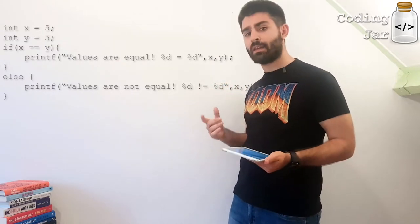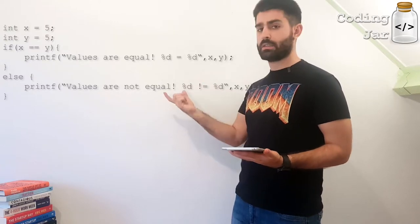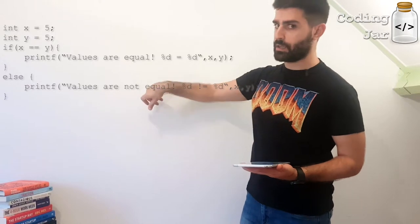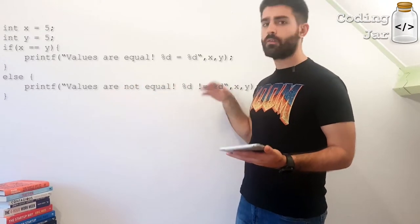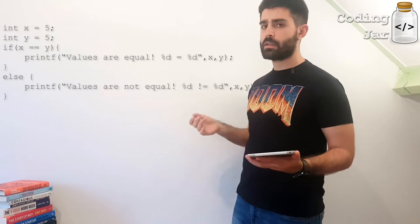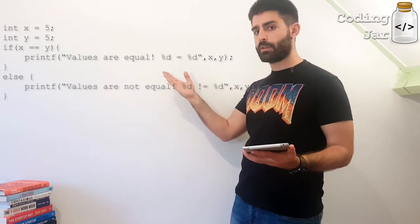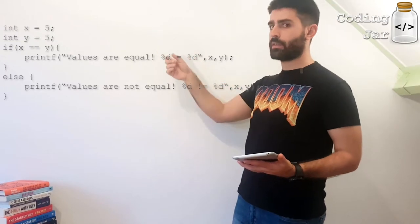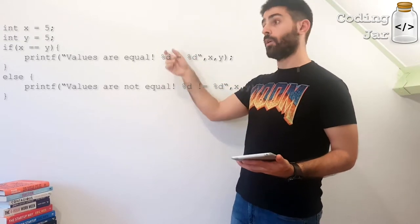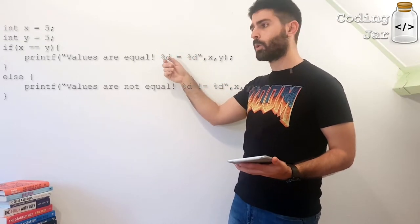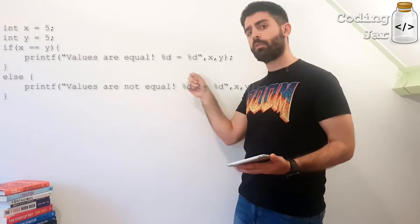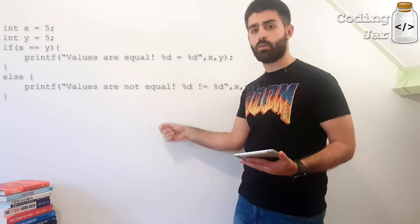So it could be redundant to redefine the statement here. So else, curly braces, printf, the variables are not equal. Which in this case they are, and they will be printed as equal. So we will go inside the if statement and not the else. We will go inside the if statement and we will skip the else block of code. The program will continue just below the else.